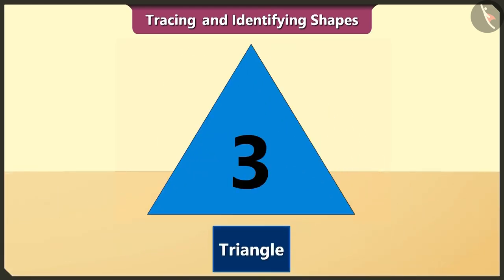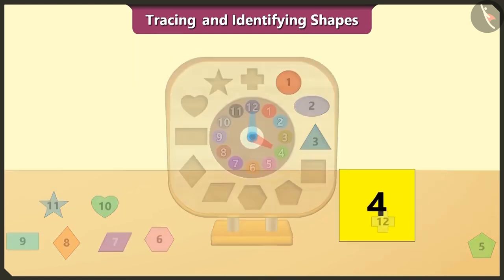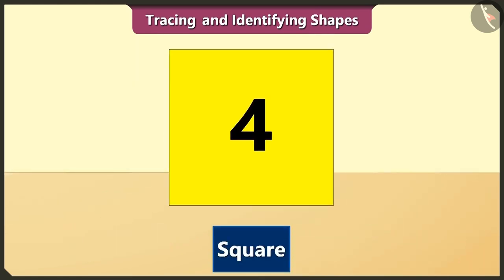The triangle is third in order. A triangle has three sides. The square is fourth in order. The length of all its four sides are the same.